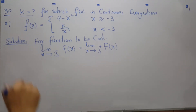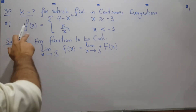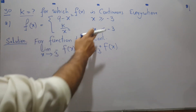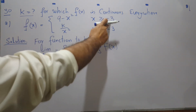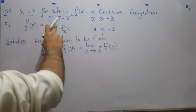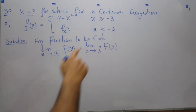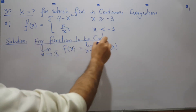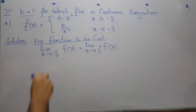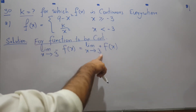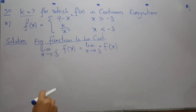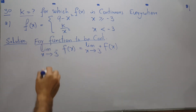Question 30, part A: f of x is 9 minus x squared when x is greater than or equal to minus 3, and k divided by x squared when x is less than minus 3. For the function f of x to be continuous, the left hand limit and right hand limit must be equal. We can use this property to find k.